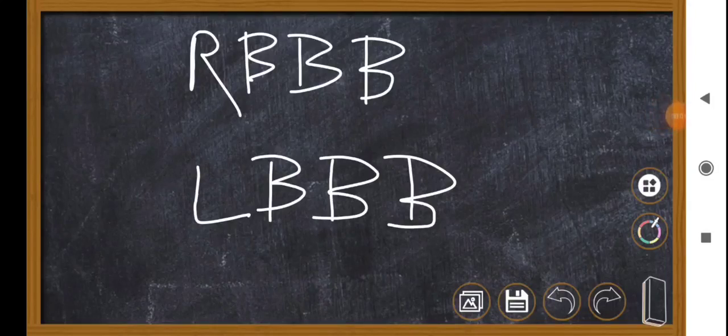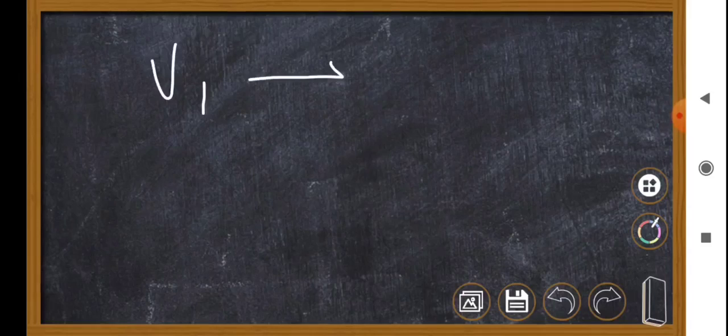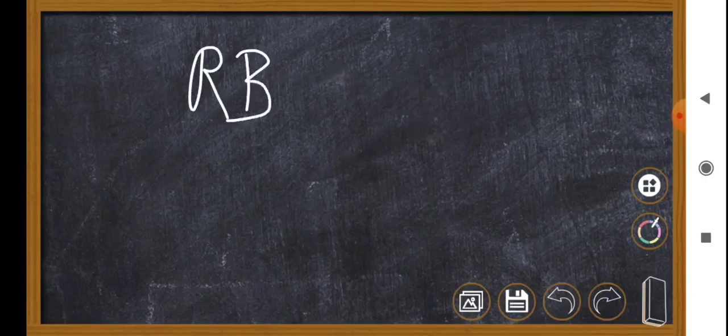The topic of this video is right bundle branch block and left bundle branch block on ECG. A standard 12-lead ECG has six limb leads and six precordial leads, V1 to V6. Let's first discuss the right bundle branch block.